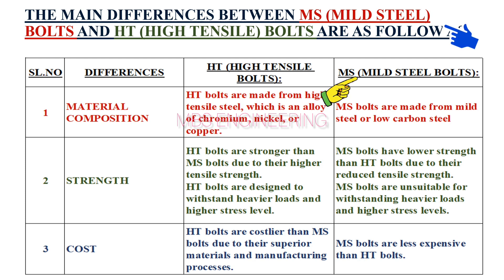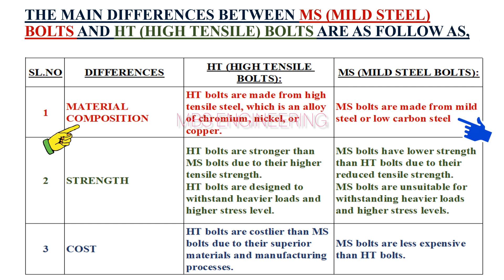Now, let's focus on the main differences between MS (mild steel) bolts and HT (high tensile) bolts. First, we will consider the material composition. MS bolts are made from mild steel or low carbon steel. HT bolts are made from high tensile steel, which is an alloy of chromium, nickel, or copper.